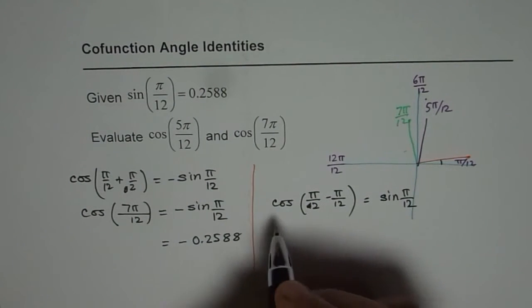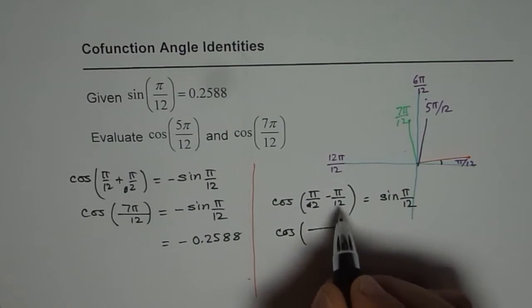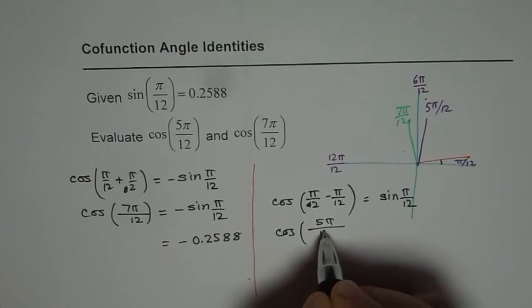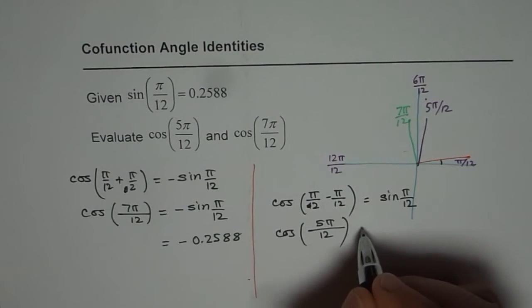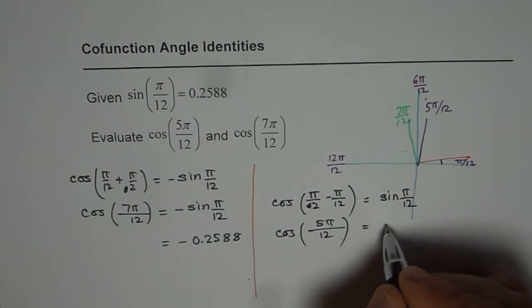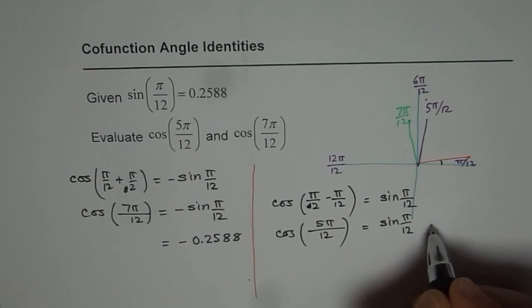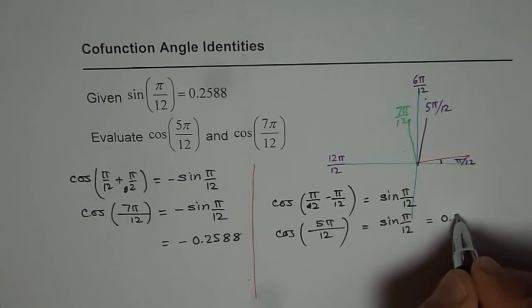Now cos of π/2 minus π/12 is 5π/12, right, 6 minus 1. So that is equals to sin of π/12. And what we are given here is sin π/12 is indeed equals to 0.2588.